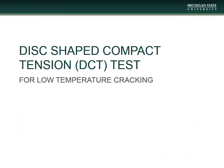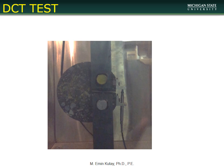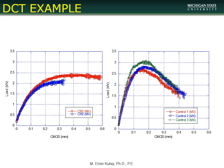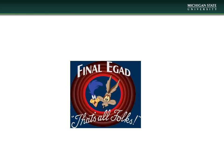Finally, the disk-shaped compact tension test, or DC(T) — sometimes called the 'Pac-Man test' — is another test for low-temperature cracking. Much credit goes to the University of Illinois group for this geometry. Monotonic loading is applied vertically in constant displacement mode, and the load-displacement curve is used to calculate strength. It is similar in concept to the indirect tensile strength test.